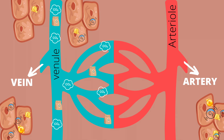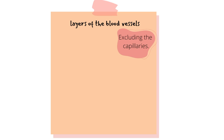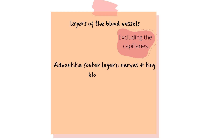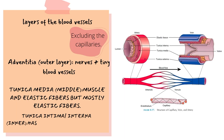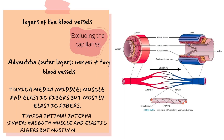Let's take a step back. The blood vessels have three layers to them, excluding the capillaries. The outermost layer is called the adventitia, which has nerve endings and tiny blood vessels. The middle layer is called the tunica media, which is composed of elastic tissue and muscular tissue, but mostly elastic. And the inner layer is called the tunica intima, or tunica interna, which has both muscle and elastic fibers, but mostly muscle tissue.